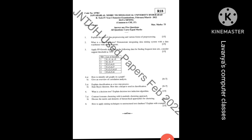The third question is: apply the FP-growth algorithm to the following data for finding frequent item sets. Consider support threshold as 30 percent, and then some data is given — just check that question once.